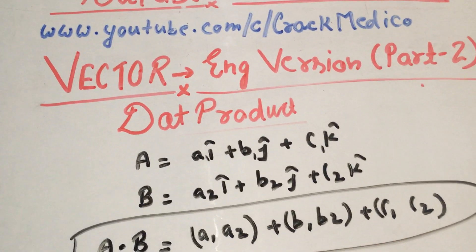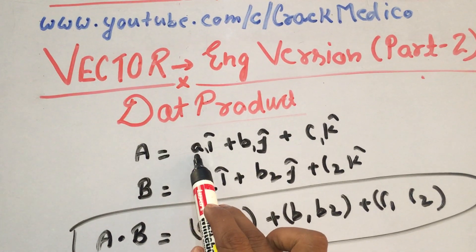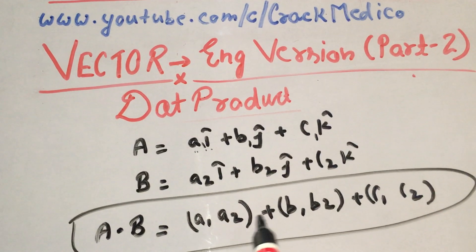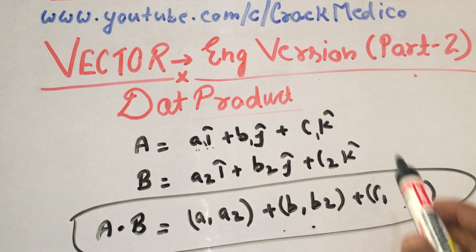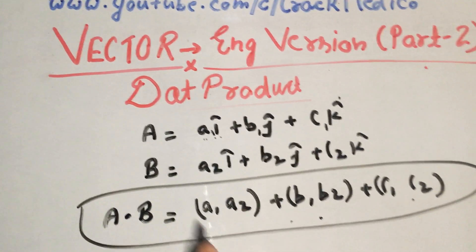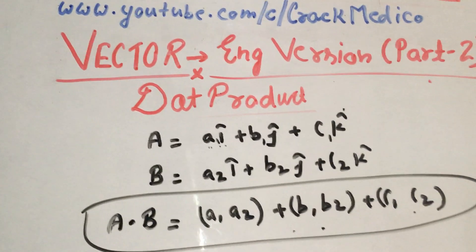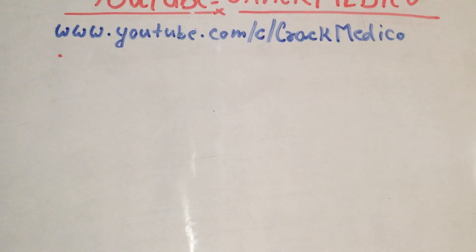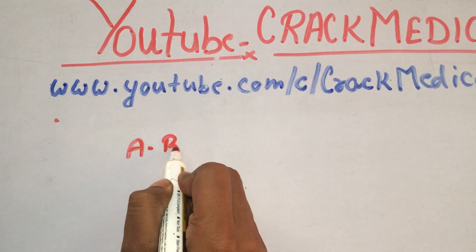Be careful about how we can easily find out the dot product of those vectors. Just multiply the coefficient of i of both vectors, plus the coefficient of j of both vectors, plus the coefficient of k of both vectors, then add those products together. This is the formula for dot product.